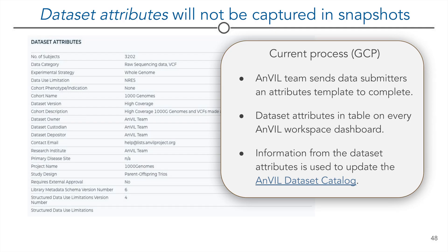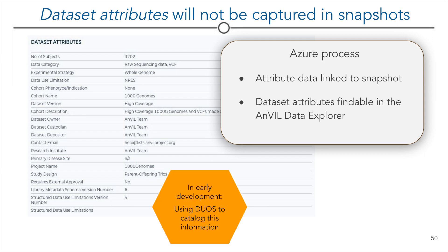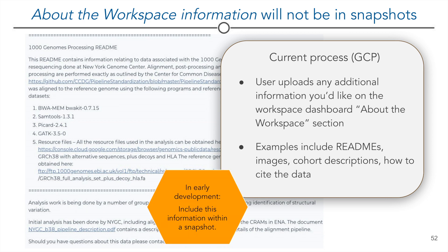Let's talk about dataset metadata. If you're familiar with submitting data in GCP, we collected data attributes from the data submitter and included them in the workspace dashboard attributes table. This is going away on Azure. Attribute data will be linked to the snapshot and findable in the Anvil data explorer. Capturing and presenting these data points is currently in development, with DUOs as a possible solution. Also a change from GCP: the 'about the workspace' section in the workspace dashboard will not be presented in snapshots. How we would present this information is still in development.